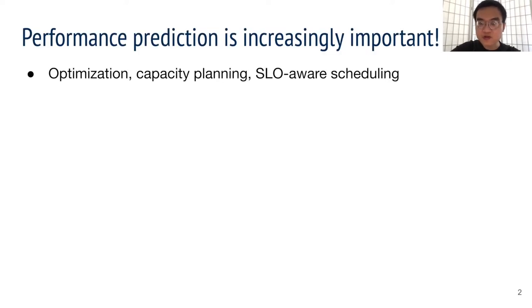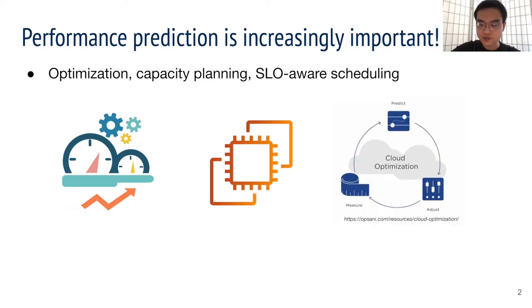First of all, system performance prediction is important. With good prediction, one can improve system performance, picking the right hardware, and optimize cloud spending.